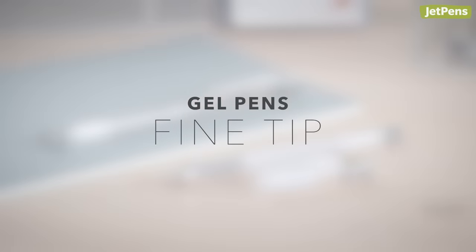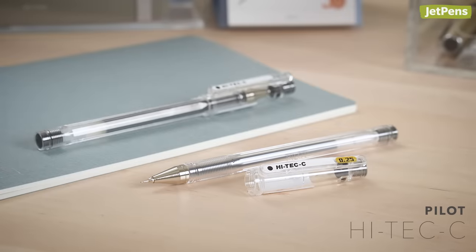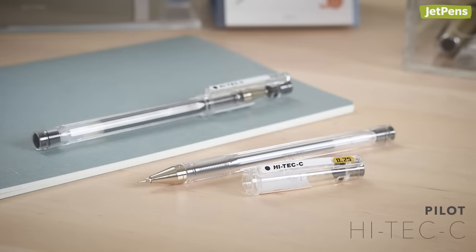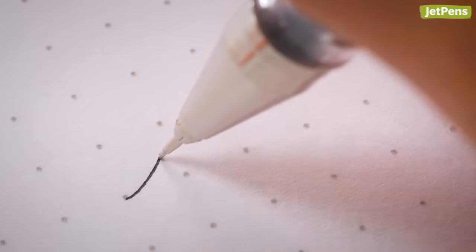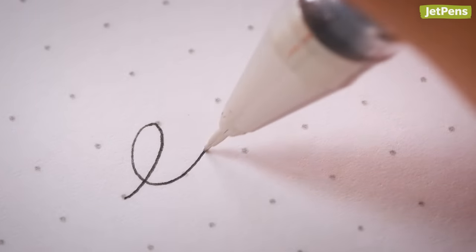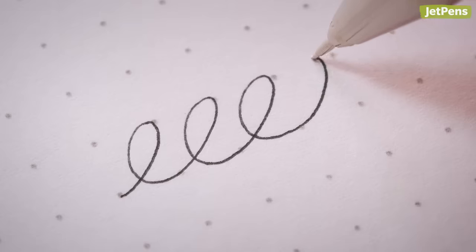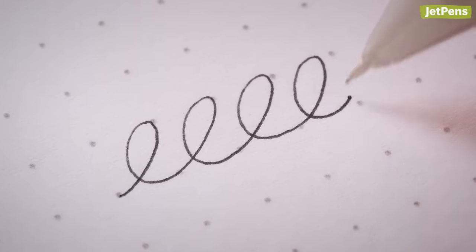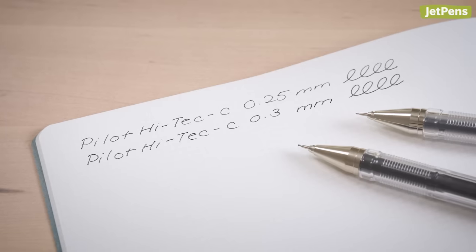Fine Tip. Few pens venture any finer than 0.5mm, but the Pilot Hi-Tech C has a tiny 0.25mm tip size. It's perfect for those who demand precision from their writing instruments. We should note that a tip size this small can feel noticeably scratchier, so if you're willing to compromise on line width, we recommend sticking with the 0.3mm tip.